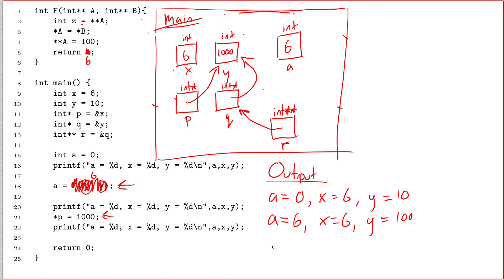All right, line 22. I print out all three things again. a equals 6, x still equals 6, and y now has the value 1000.